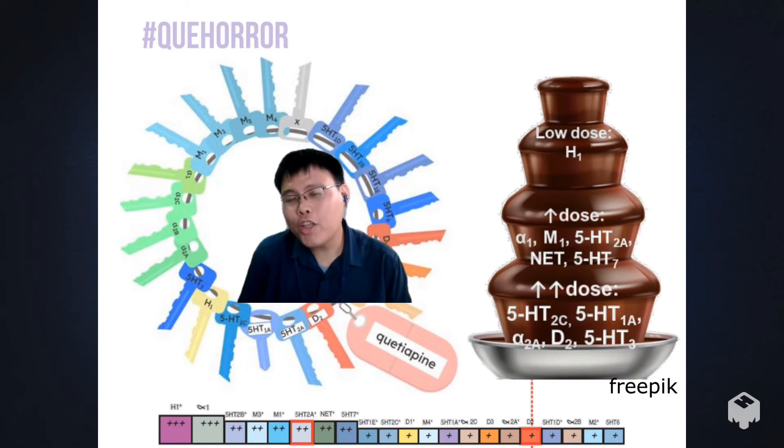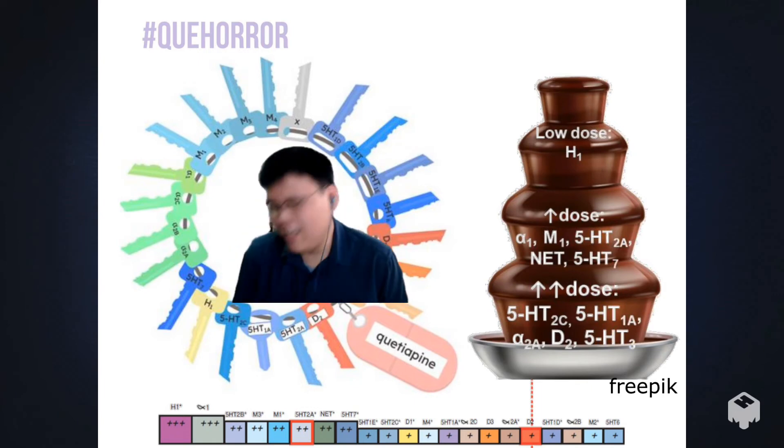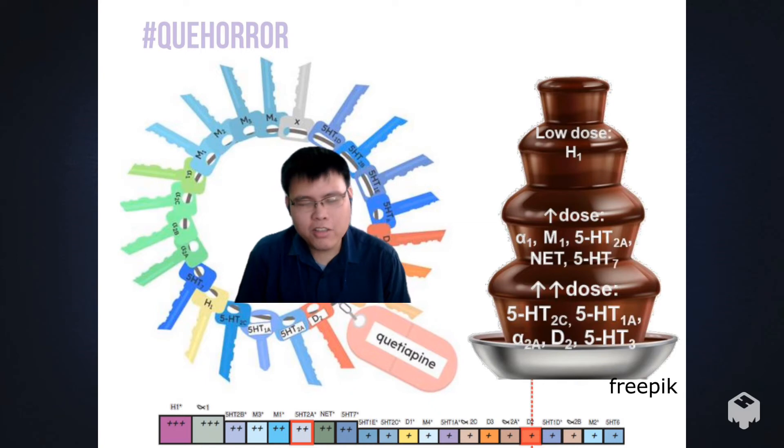There are two exceptions for which you might actually consider quetiapine for insomnia. One of them, this is from Dr. George Dawson I believe, if your only two choices, as if you've tried everything on the shelf and your only two choices left are quetiapine and alcohol, yeah I'd rather the person be on quetiapine than alcohol, because alcohol is deadlier by a long shot. Alcohol is actually the most deadly drug in the world—deadlier than shabu, deadlier than cannabis, deadlier than cocaine and all of that.